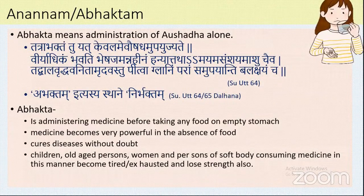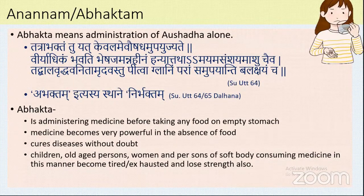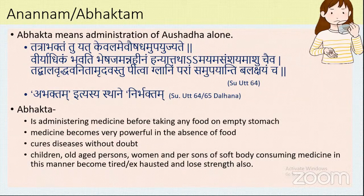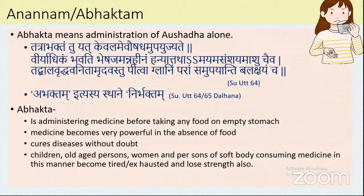The first one is Ananna or Abhakta. Before going into this, these samhitas were written years back, and at that time only two aushadha kalas were there. For academic or exam purposes we can write all of these, but when it comes to practical aspects it is a little bit different. Now the ahara kalas are also different — now we are taking food three or four times.